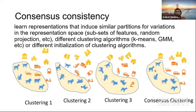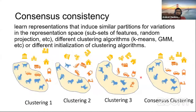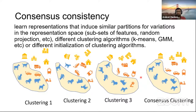However, consensus consistency is ill-posed. For example, if all examples are assigned to one cluster by one algorithm and another algorithm agrees, they may be wrong but still satisfy consensus consistency. So using exemplar, population, and consensus consistency together is what gives us a better clustering algorithm at the end. Just doing consensus consistency alone may result in trivial solutions.